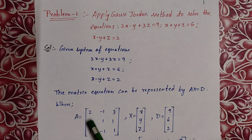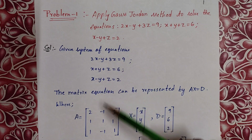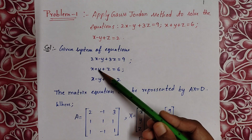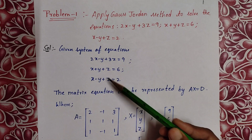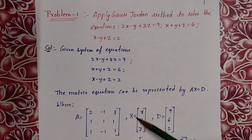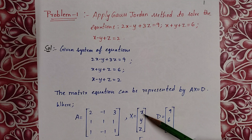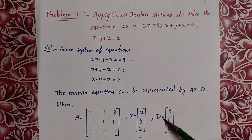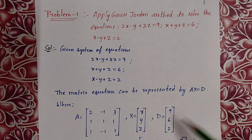Now A equals the matrix: row 1 is [2, -1, 3], row 2 is [1, 1, 1], row 3 is [1, -1, 1]. And X equals the column vector [x, y, z] — these are the unknown values we need to find. D equals the column vector [9, 6, 2] — these are the constants.